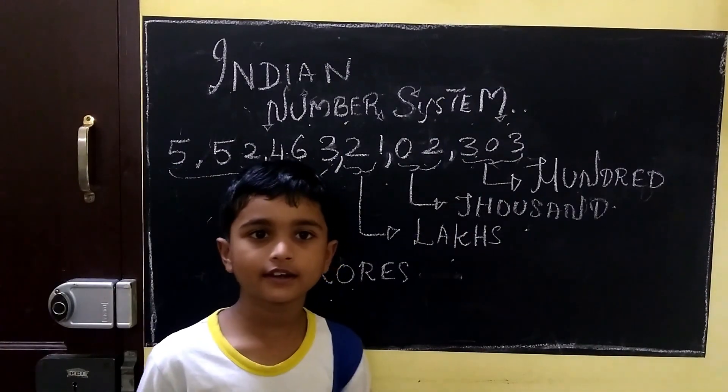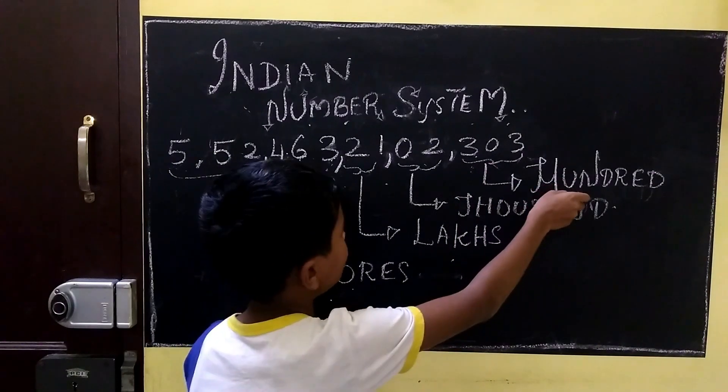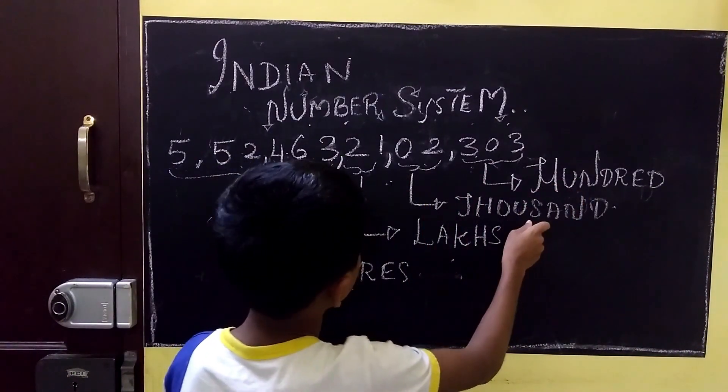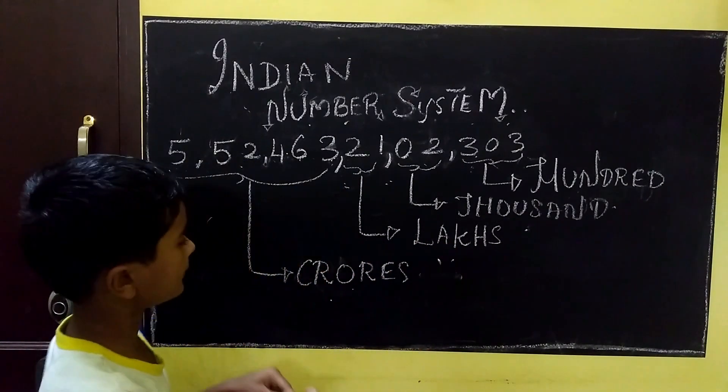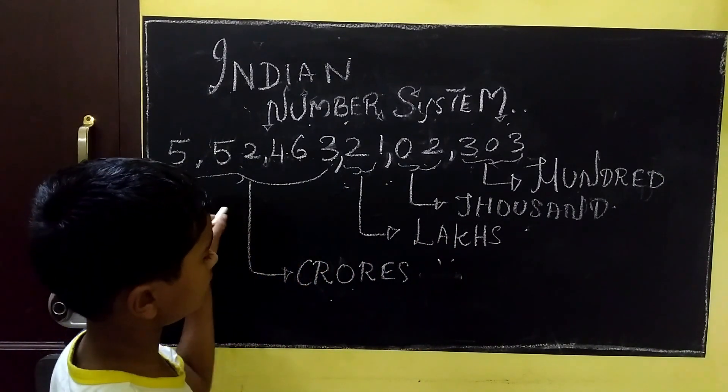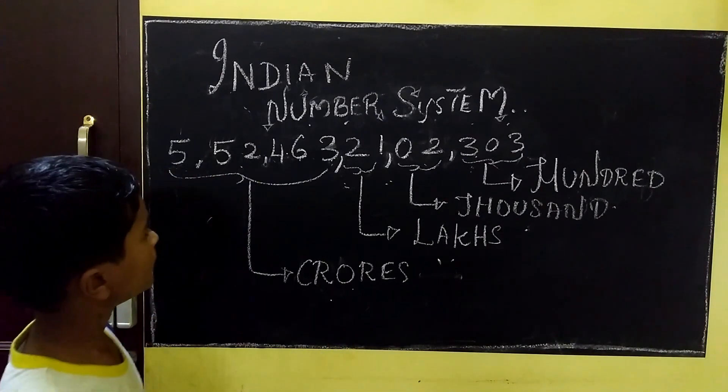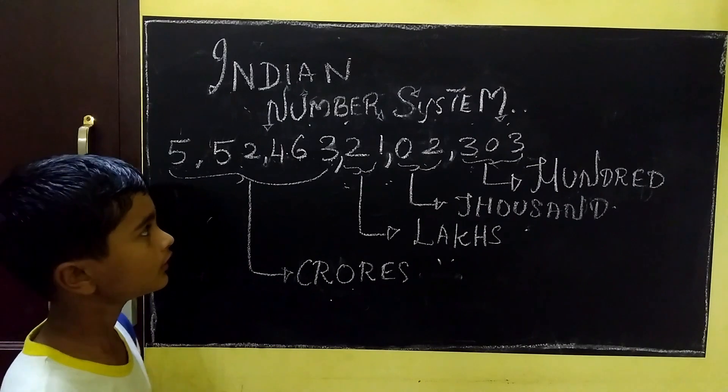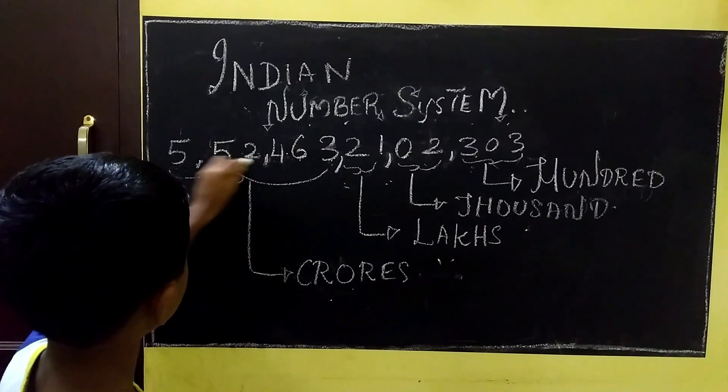Now, we are going to read this number in Indian number system. First head is hundreds, second head is thousands, third head is lakhs, the last remaining digits is crores. We have 5 digits here. But how to split this? Don't worry. We will split it.